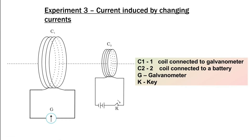Now he moved to experiment number three, called current induced by changing currents. In this experiment he also took two coils, C1 and C2. Coil C1 is connected to a galvanometer, and coil C2 is connected to a battery. He also introduced a key, with one end connected to the battery and the other end connected to coil C2.